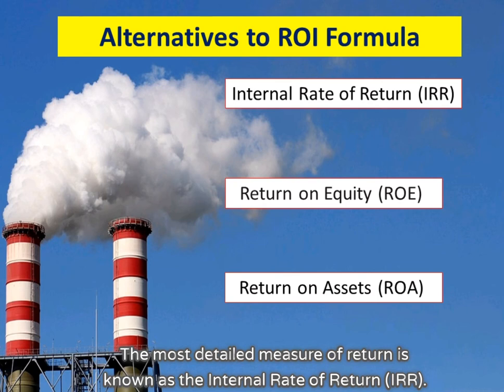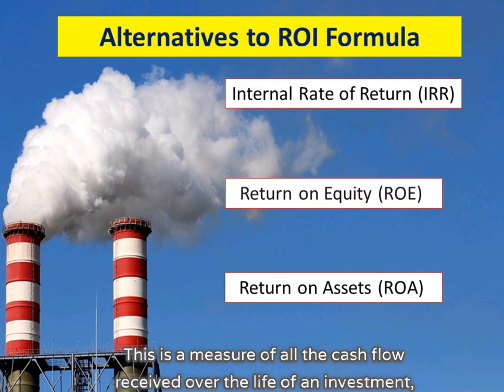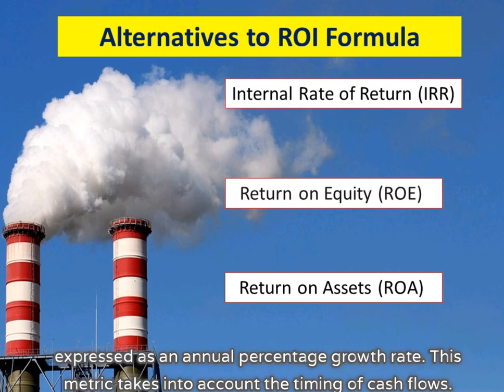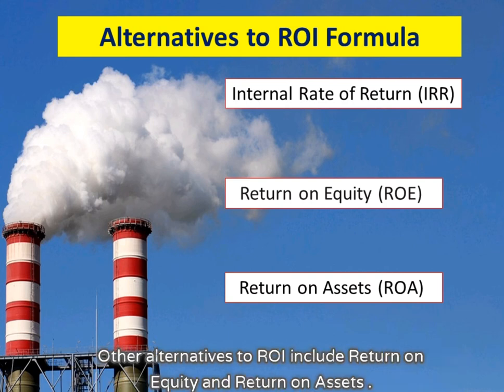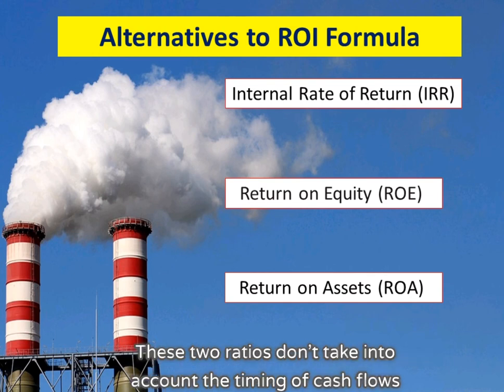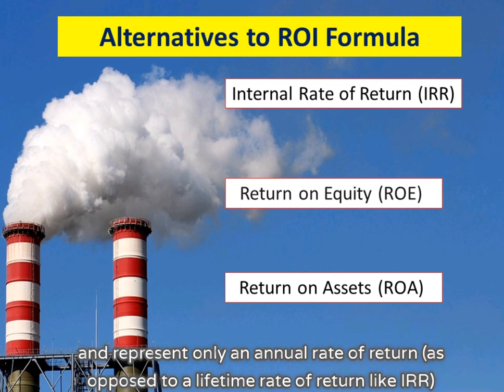The most detailed measure of return is known as the Internal Rate of Return (IRR). This is a measure of all the cash flow received over the life of an investment, expressed as an annual percentage growth rate, and this metric takes into account the timing of cash flows. Other alternatives to ROI include return on equity and return on assets. These two ratios don't take into account the timing of cash flows and represent only an annual rate of return, as opposed to a lifetime rate of return like IRR.